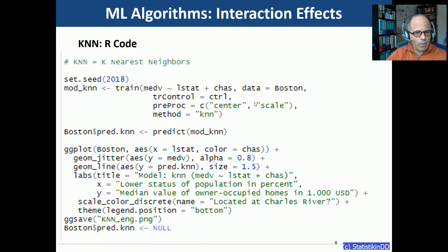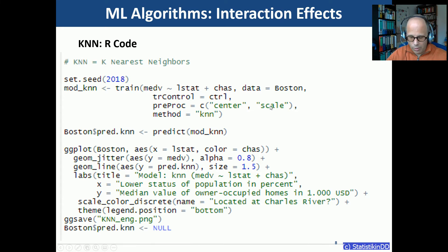Here is the code. In the train method I use method KNN, and there is one preprocessing step that is easy to apply using caret with the preProcess parameter. It is recommended to center and scale predictors so that different scales do not distort the model.